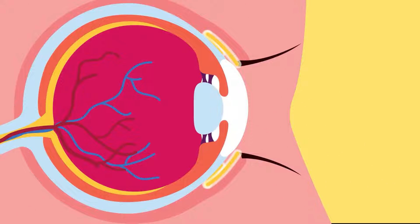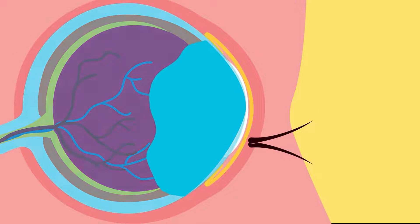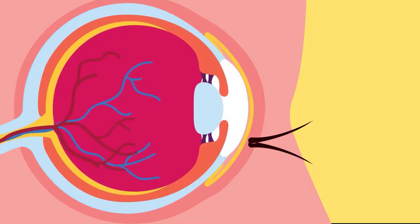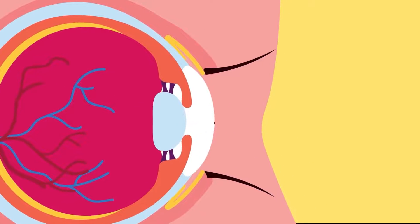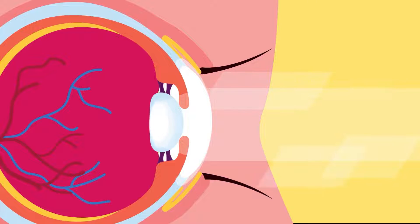Conjunctiva is the thin epithelium covering the surface of the eyeball. It secretes mucus to lubricate, clean and maintain moisture. Next comes the cornea, which is a transparent, curved layer that bends light to converge at the lens.